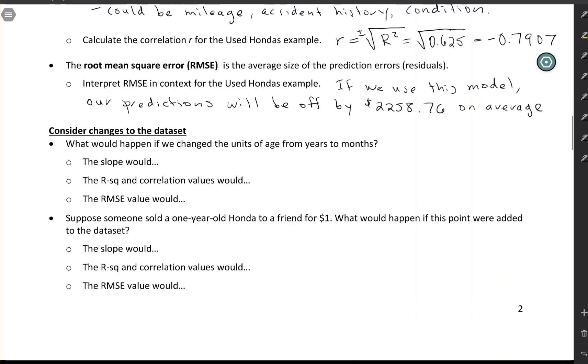One more thing to think about is how this is going to change if we do things like change the units or if we add an outlier to the data set. So I've got two changes here. What if we change the units of age from years to months? And what if we added an outlier of a one-year-old Honda that somebody sold to their friend for $1? Take a second, pause the video, and think about how this would affect the slope, the R squared, and the root mean square error.